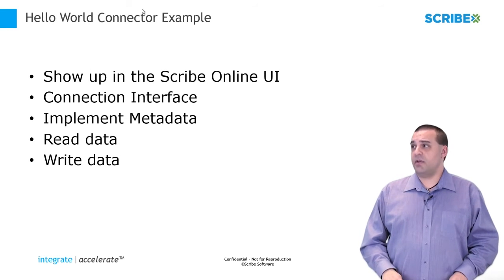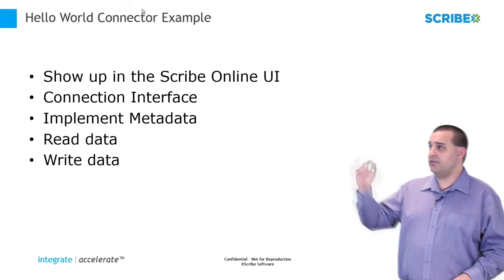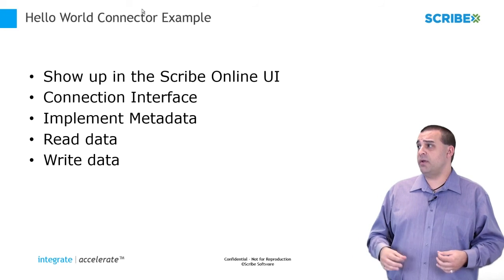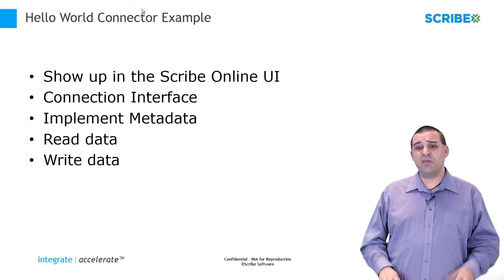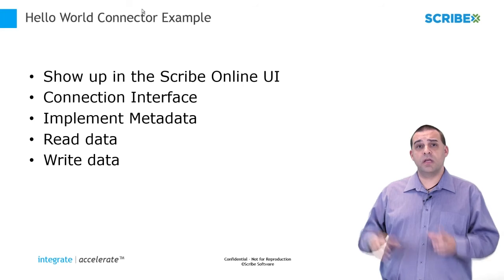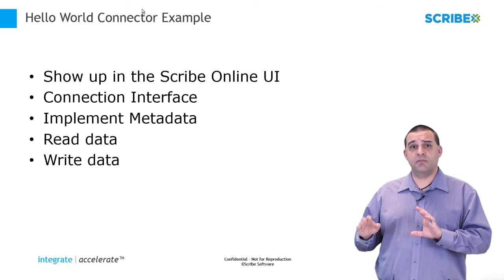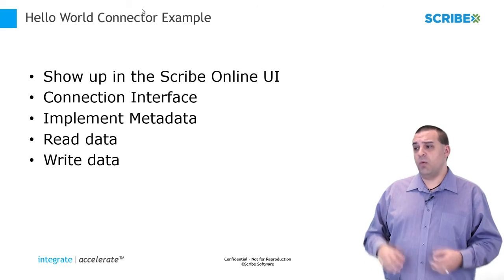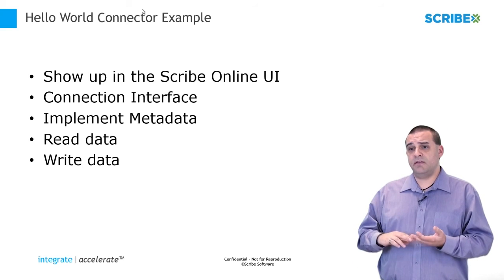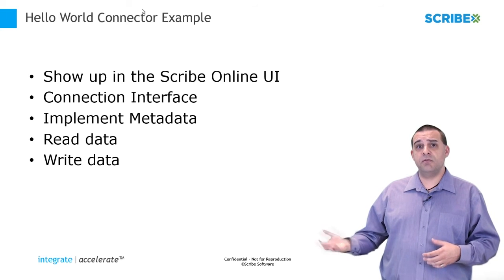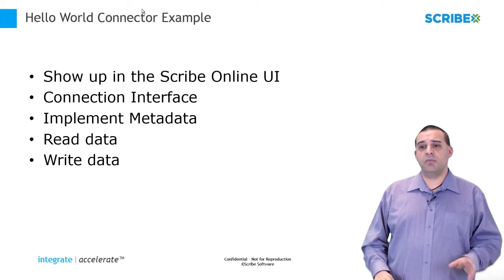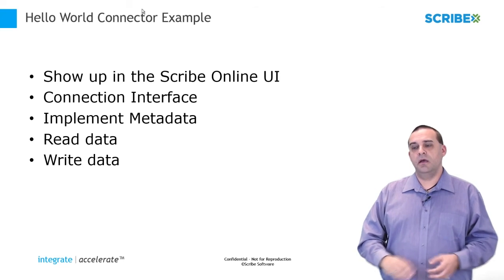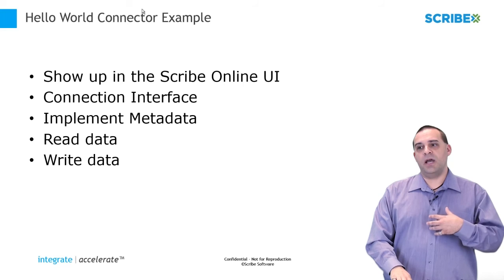When we get into the Hello World connector example, we're going to get your connector recognized by the Scribe Online platform and the agent so that it shows up in the UI. Then we'll show you how to use our Connector Development Kit to create your connector interface, providing the fields necessary for your customers to log in and authenticate against your system. Next is metadata — retrieving from your system all the entities and parameters within those entities. Then we'll have the connector actually read and write that data as defined by the map.